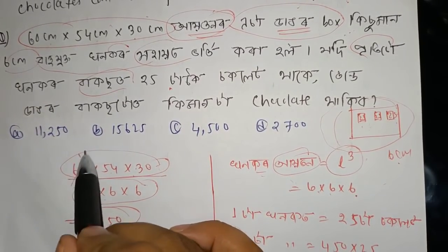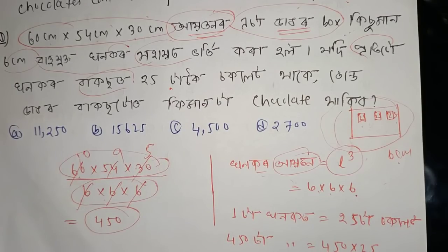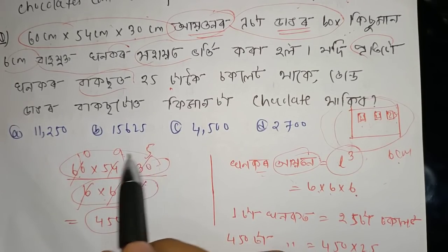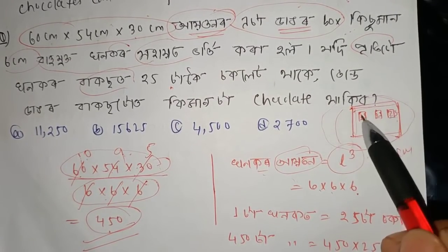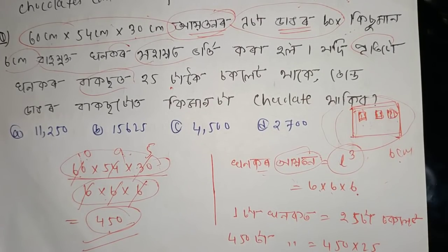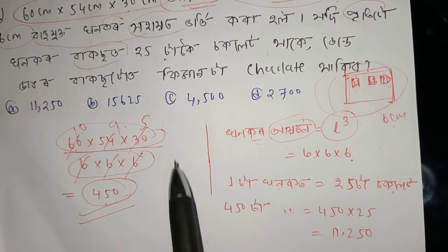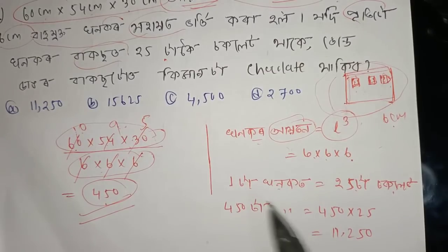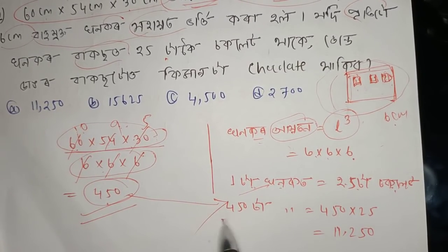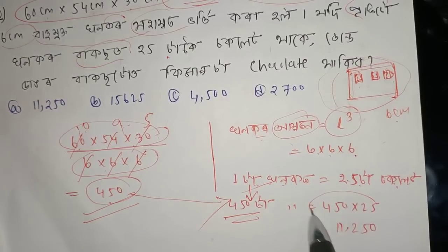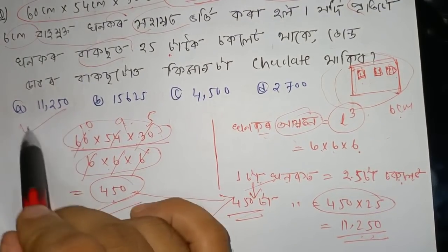We get 10 points × 9 points × 5 points = 450 small cubes. Multiplying by 25 chocolates per cube: 450 × 25 = 11,250 chocolates. So the answer is 11,250 — this is the correct option.